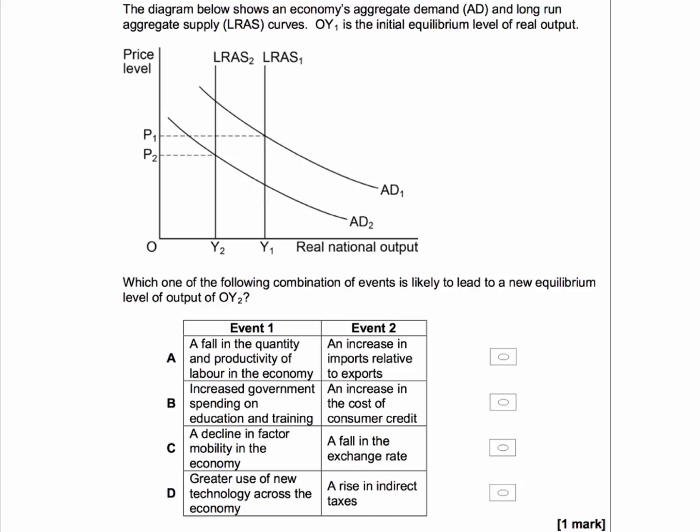So then we're asked to find which one of the following combination of events is likely to lead to a new equilibrium level of output, OY2. Now before we go through the events, look at the diagram carefully. We can see that the aggregate demand has shifted to the left.